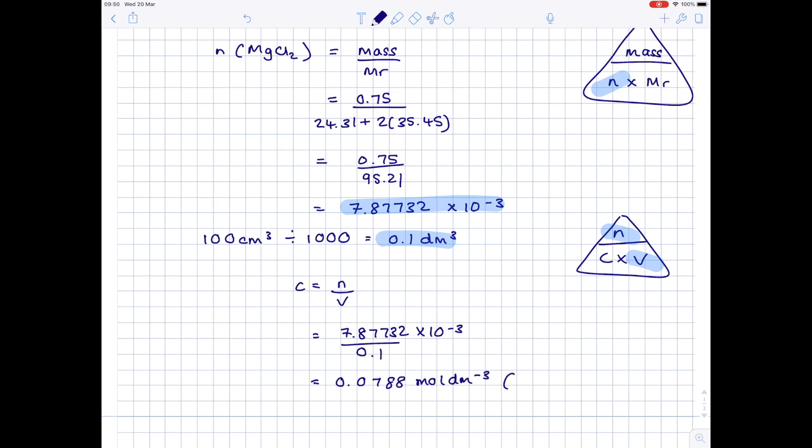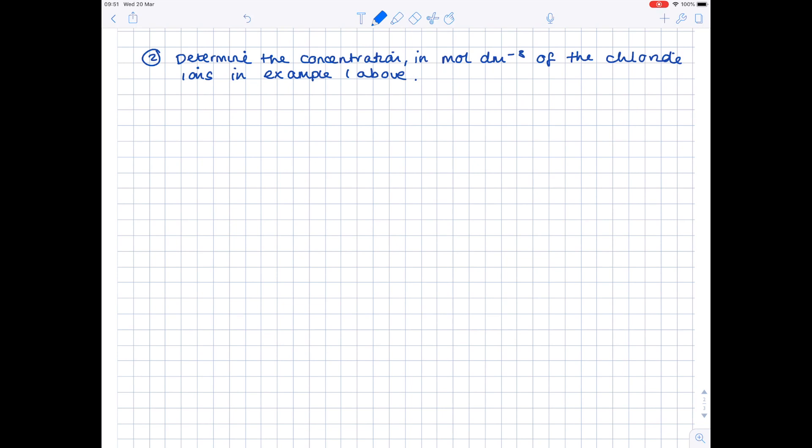Question 2. Determine the concentration in moles dm⁻³ of the chloride ions in example 1 above. And the thing you have to do here is write out the ionic equation for the compound given above, which was obviously magnesium chloride. So when it breaks down, it forms magnesium ions. And because it's in group 2, that's Mg²⁺.